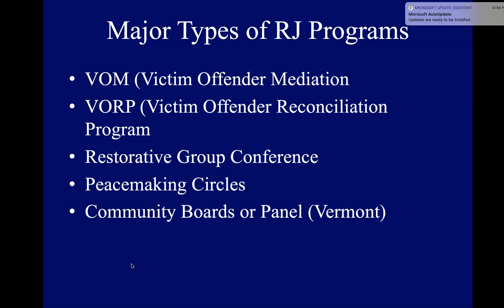In the Restorative Group Conference, the victim, victim supporters, the offender, offender supporters, and a facilitator engage in a dialogue to explore what happened, how each has been affected, and what needs to happen. Every participant has an opportunity to speak on the issues and has input into the final outcome. Expressing emotions is encouraged, and agreements about the obligations for the offender are by consensus of all participants.